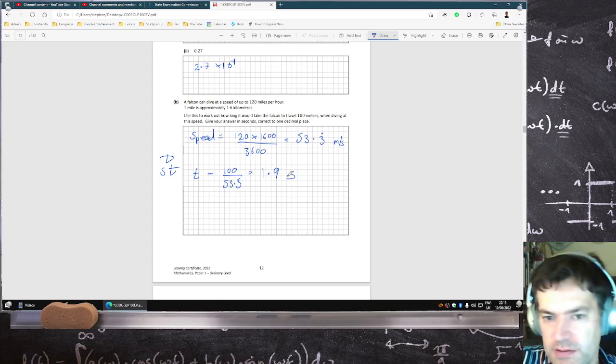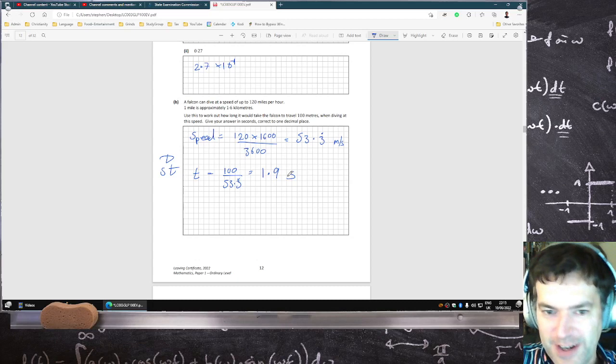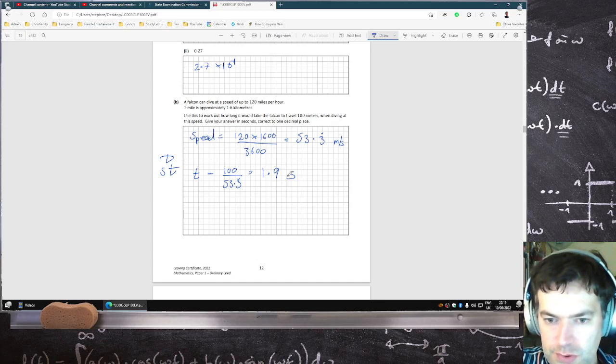I mean, it should be a small answer. 120 miles per hour is fast and 100 meters is not far. So, 120 miles per hour. Okay, I think that's right.